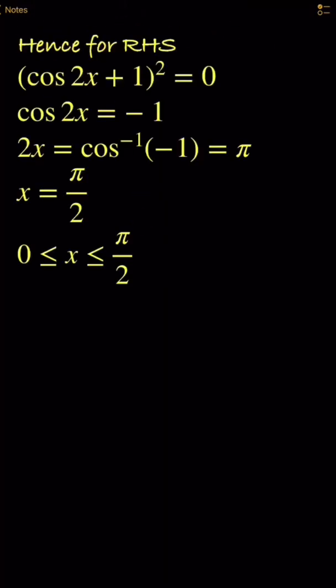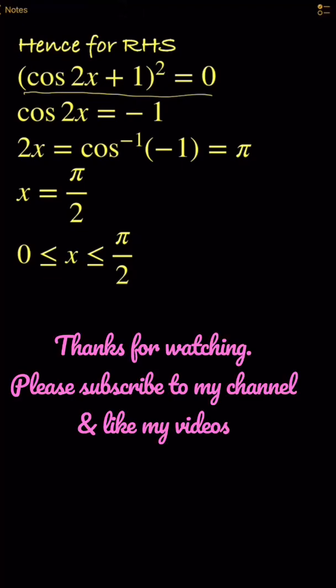For the right hand side, cos 2x + 1 equals 0. So 2x equals to cos⁻¹(-1) which is π, and therefore x is π/2.